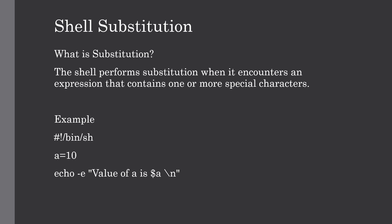The shell performs substitution when it encounters an expression that contains one or more special characters. In this example, the value of a variable is substituted by its value, and backslash n is substituted by a newline. We have to use the -e option to enable the interpretation of backslash escapes. If we don't use -e, it will treat backslash n as a string and print it along with our string.